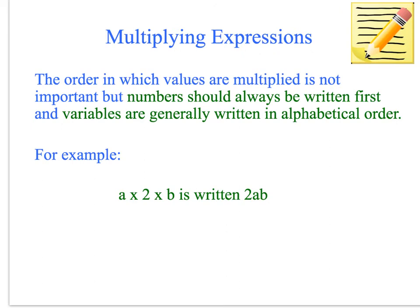To multiply expressions, we can multiply them in any order. But just to have a standardised rule, numbers should always be written first and variables are written in alphabetical order. They don't have to be, but it is easier and makes it a standardised way of writing. For example, when we've got A times 2 times B, we write the number first, then the variables in alphabetical order — so you write 2AB. Because it's multiplication, we just write it next to each other.